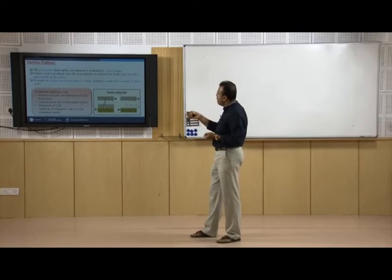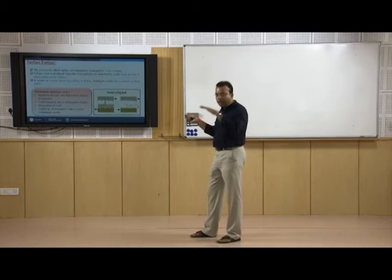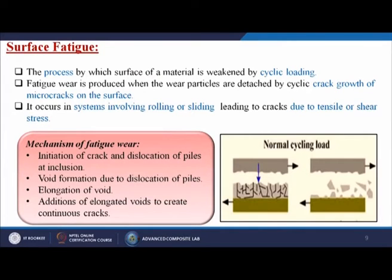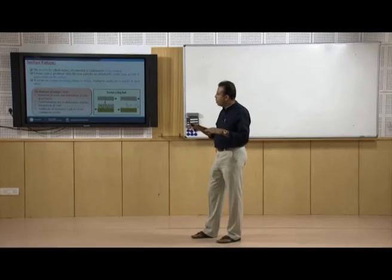Surface fatigue is the process by which the surface of materials is weakened by cyclic loading — continuously maintaining a load on your surface. Fatigue wear is produced when wear particles are detached by cyclic crack growth of micro-cracks on the surface. It occurs in systems involving rolling or sliding, leading to cracks due to tensile or shear stress. Continuously applying a load causes the material to break into small particles.